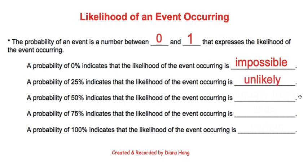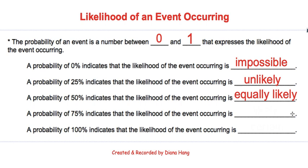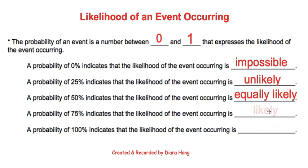The probability of 50% — the likelihood of that event occurring would be called equally likely. If a probability is 75%, then the likelihood of that event occurring is what we call likely.